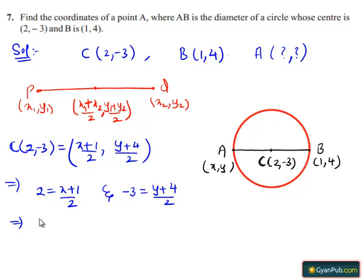This implies, multiplying by 2 on both sides, we get 2 times 2 is 4 equals to x+1 and 2 times -3 is -6 equals to y+4.